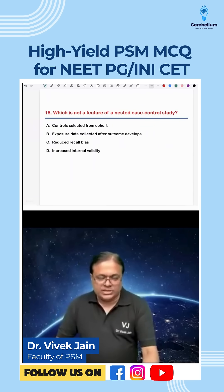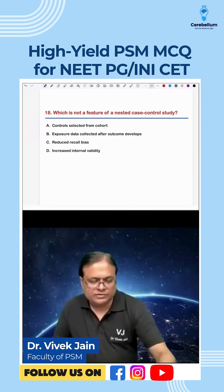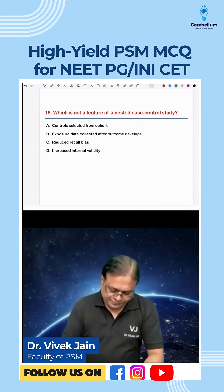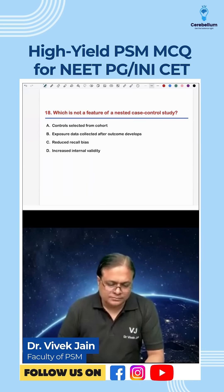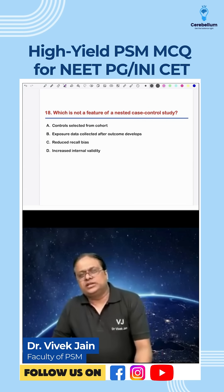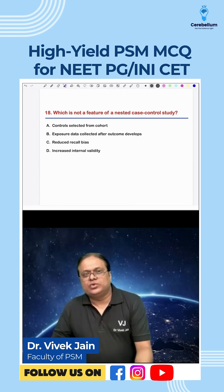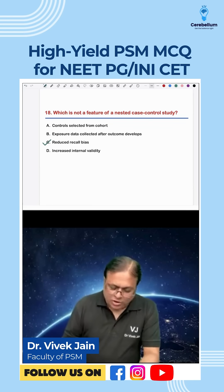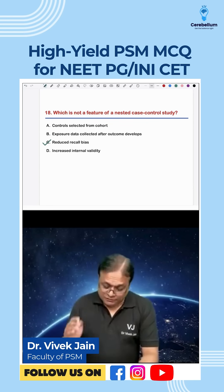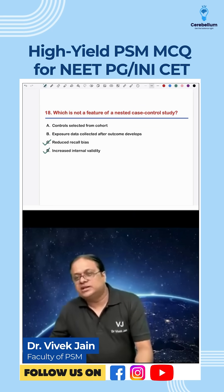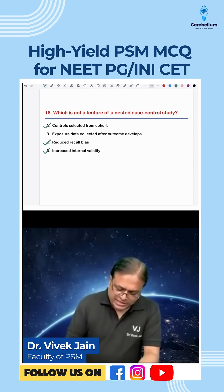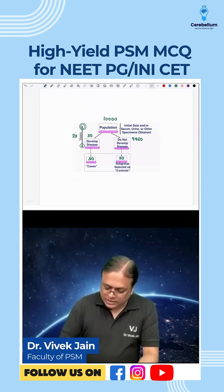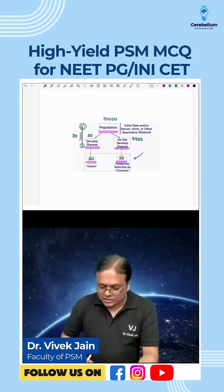Now read the question carefully: which is not a feature? It is a very easy question. Since it proceeds in a forward direction, it reduces recall bias — everything is happening in front of your eyes. It is a very good study design with high internal validity but poor external validity. Controls are selected from the cohort only — you can see that even controls are selected from that cohort of 10,000 people only.